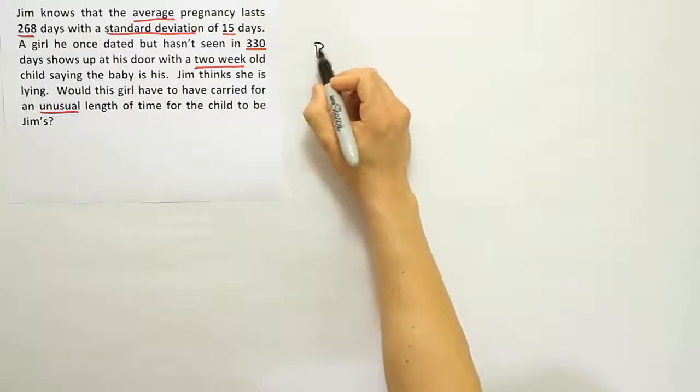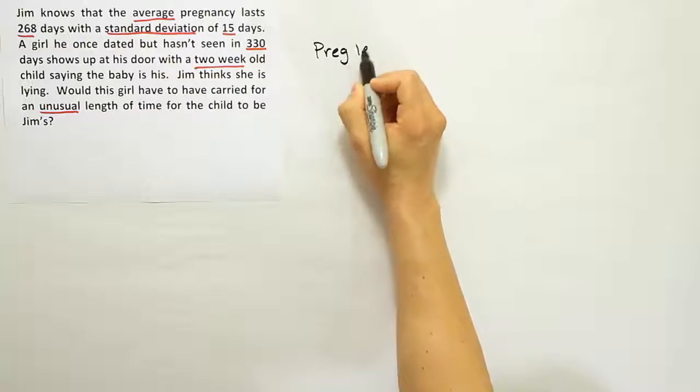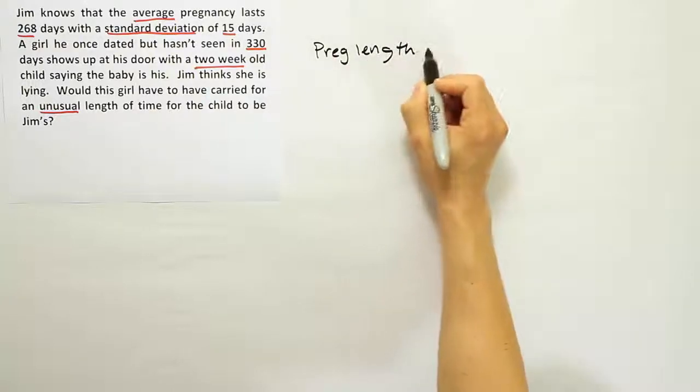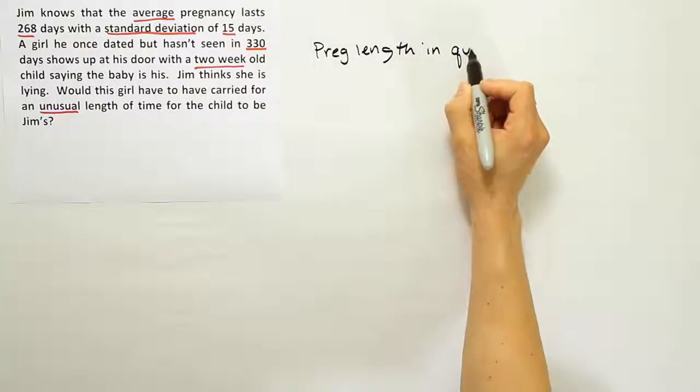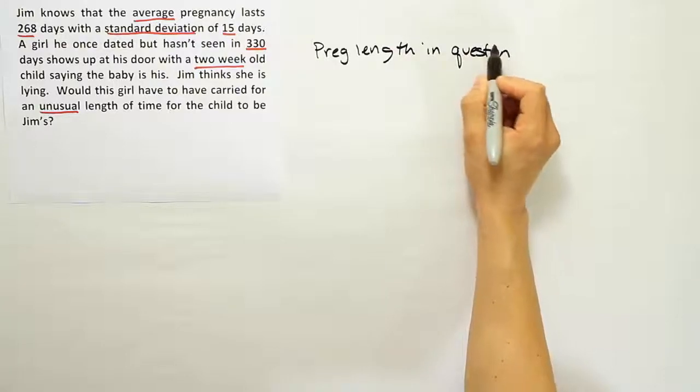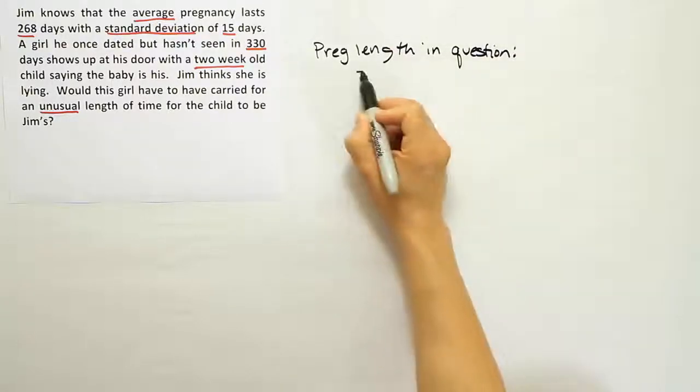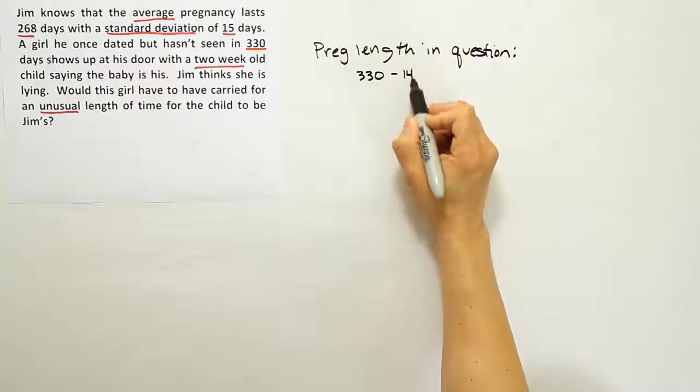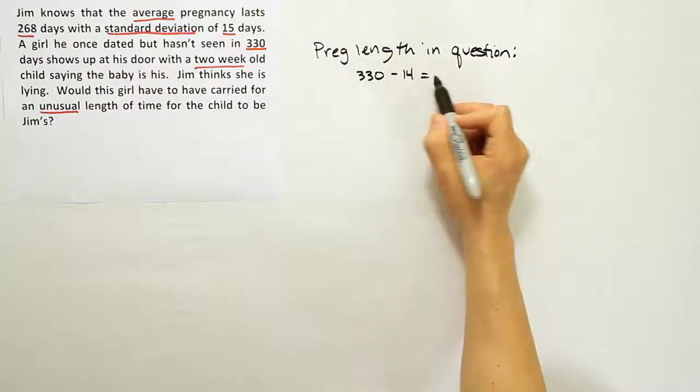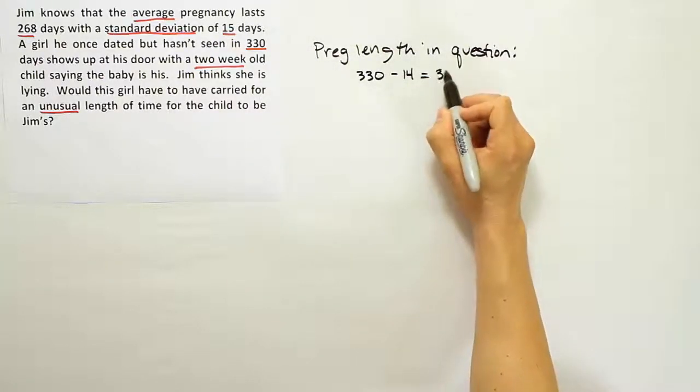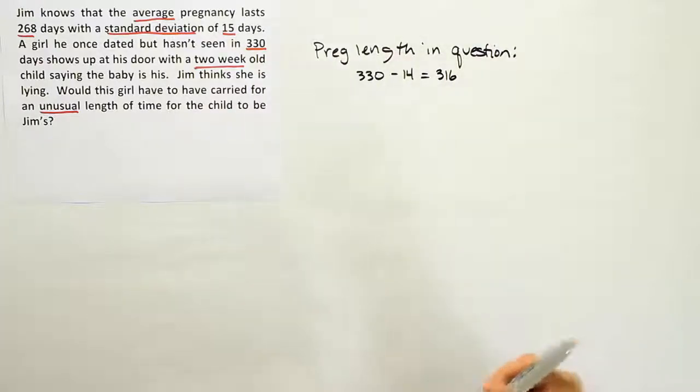So the pregnancy length in question here, the one we're dealing with, is actually going to be the 330 days minus the 14 days old the child already is, which means she would have had to carry the child for 316 days before giving birth.